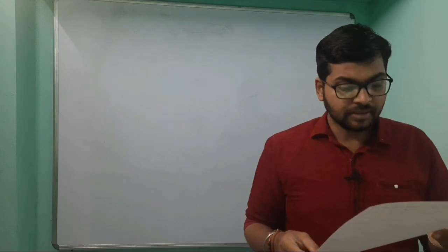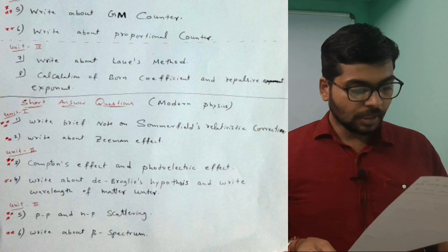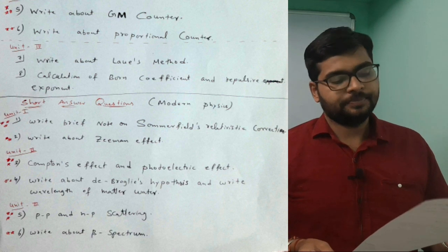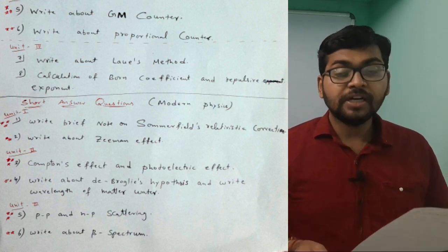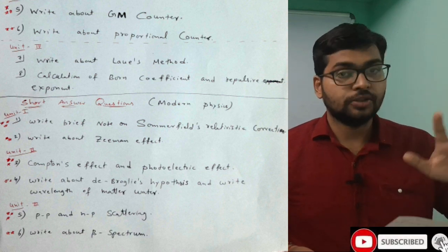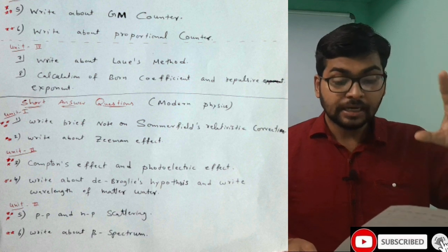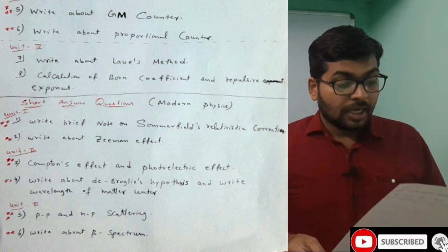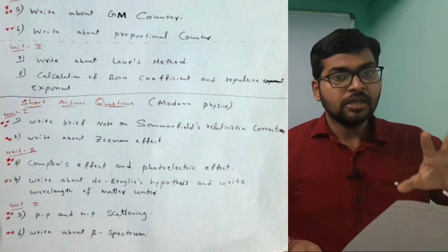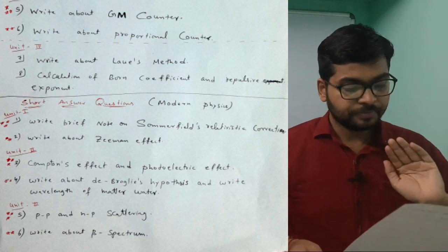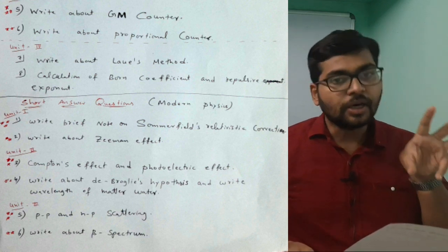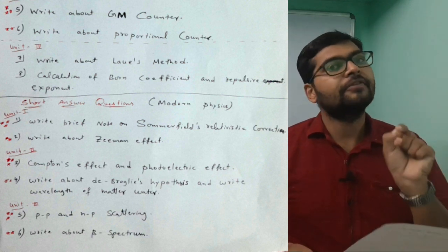Now coming to short answer questions. First unit: write brief note on Sommerfield relativistic correction - very very much important, sometimes it will come for long answer also. Write about Zeeman effect - also very much important. In second unit, quantum effect and photoelectric effect is very much important. You have to study thoroughly, each and every point you have to make note of.